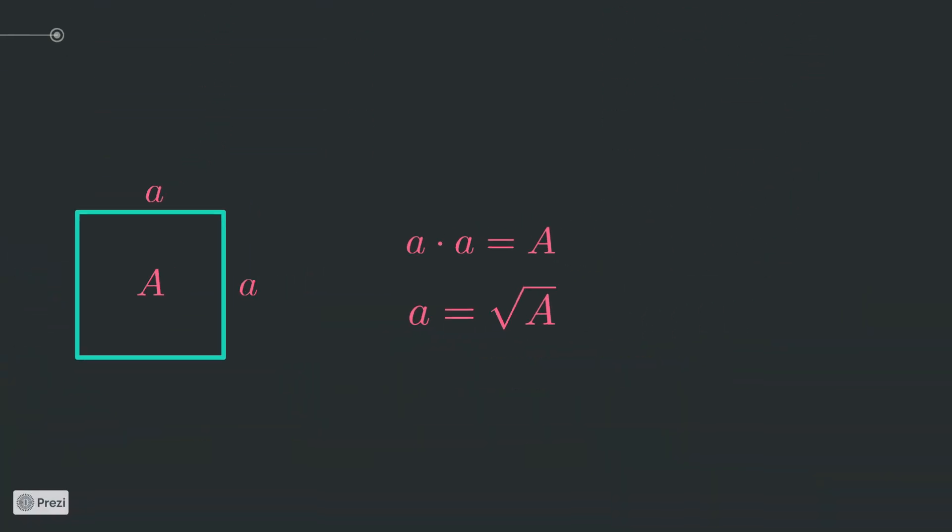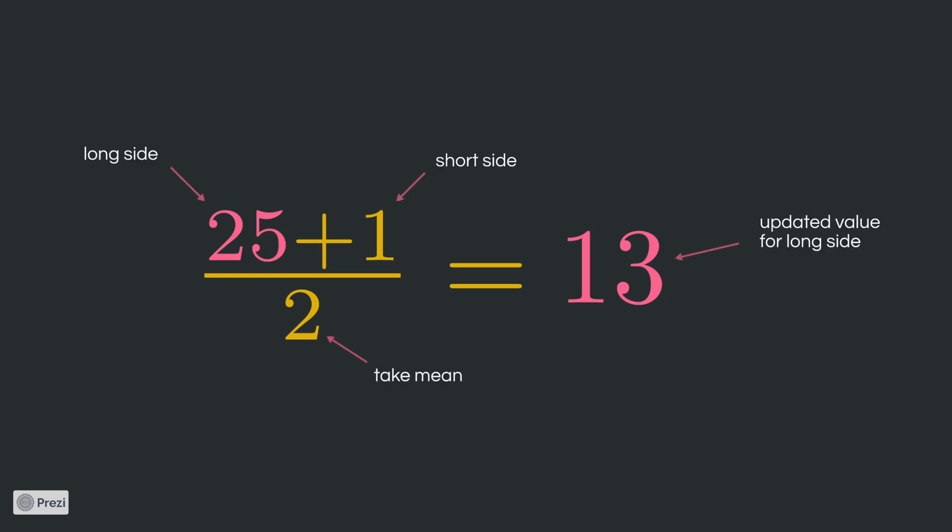Again, we take the example of 25. We simply take the average of the long side and the short side. And if you think about it, that makes totally sense in order to bring the two sides closer together in length.